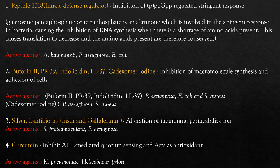The fourth molecule is Curcumin — which is nothing but turmeric. It inhibits AHL-mediated quorum sensing and acts as an antioxidant. AHL is related to quorum sensing, and curcumin has been found to be active against Klebsiella and Helicobacter.